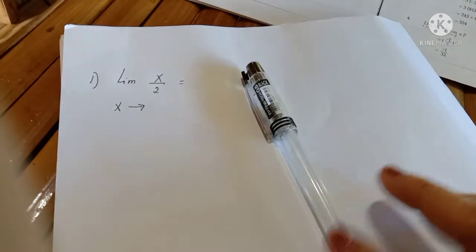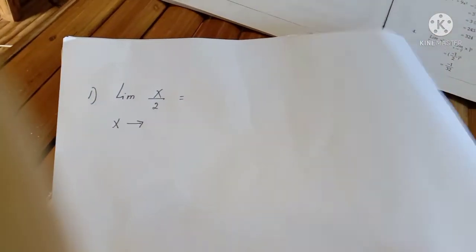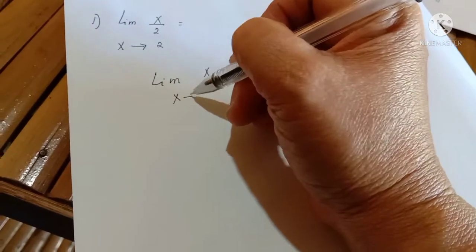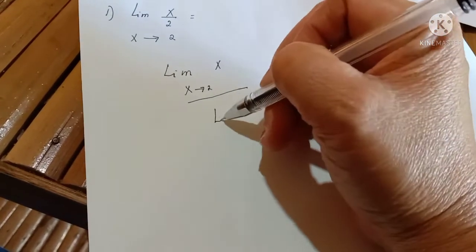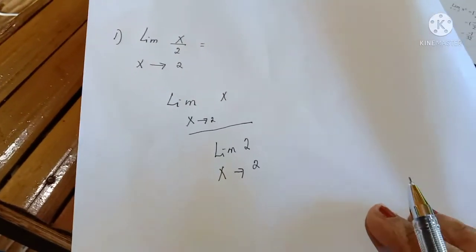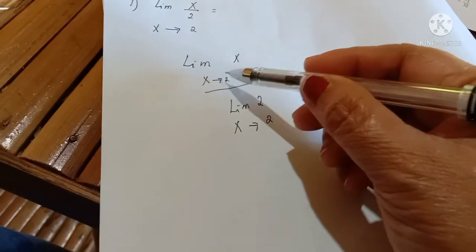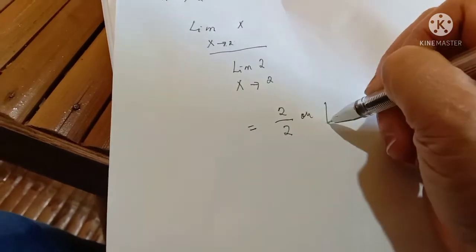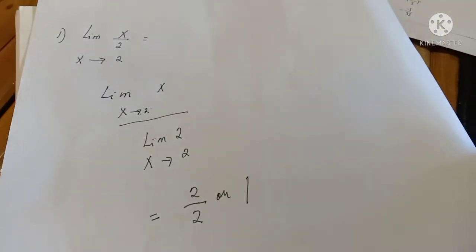Example number one: find the limit of x over 2 when x approaches 2. Using the definition of the limit of a quotient of a function, we separate it as the limit of x as x approaches 2, over the limit of 2 as x approaches 2. Since x approaches 2, we substitute: 2 over 2, which equals 1. So the limit of x over 2 when x approaches 2 is 1.